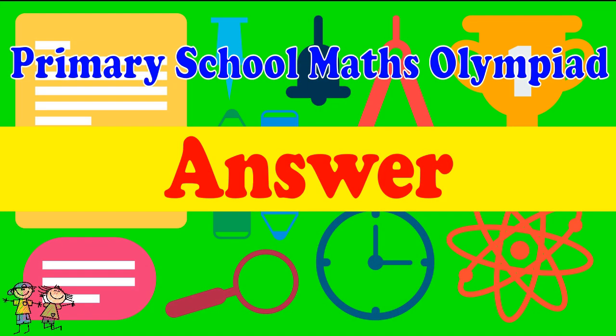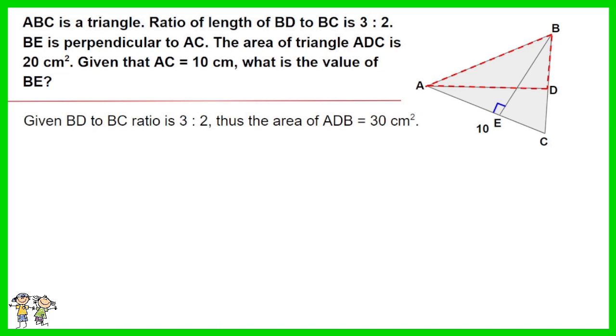Here is the recommended answer. Given BD to BC ratio is 3 to 2, thus the area of ADB equals 30 cm squared.